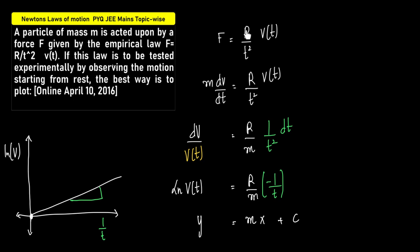Given F = R/t². Now what is F? F equals ma, and a is dv/dt. So F = m(dv/dt). We have R/t² times v(t), which is a function of t.